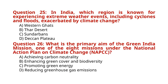Question 25: In India, which region is known for experiencing extreme weather events, including cyclones and floods, exacerbated by climate change? A. Western Ghats. B. Thal Desert. C. Sundarbans. D. Deccan Plateau. The correct answer to Question 25 is option C: Sundarbans. Question 26: What is the primary aim of the Green India Mission, one of the eight missions under the National Action Plan on Climate Change (NAPCC)? A. Achieving carbon neutrality. B. Enhancing green cover and biodiversity. C. Promoting green energy. D. Reducing greenhouse gas emissions. The correct answer to Question 26 is option B: Enhancing green cover and biodiversity.